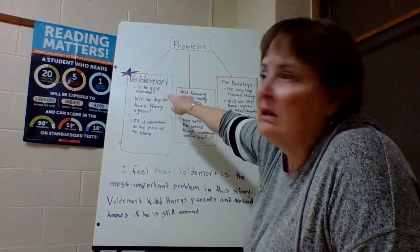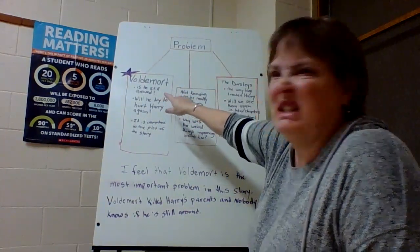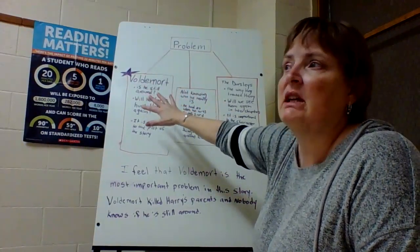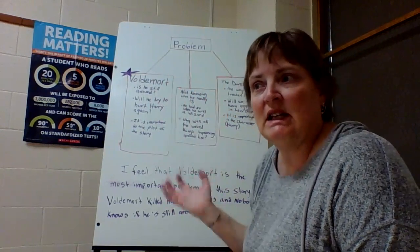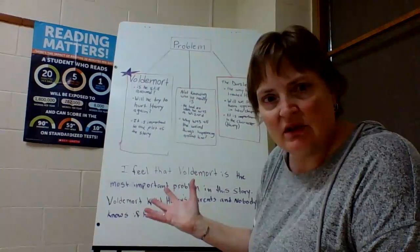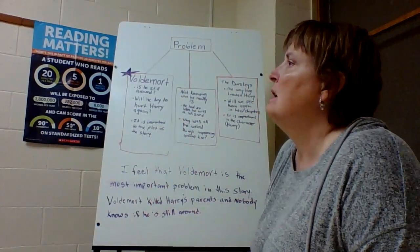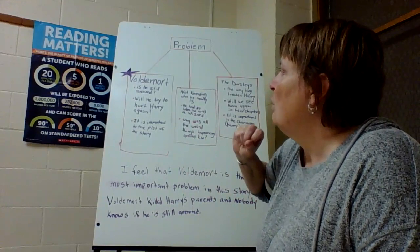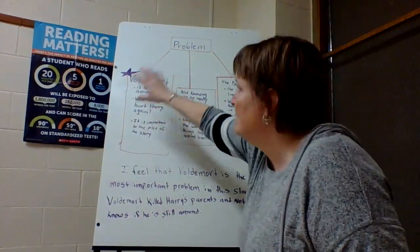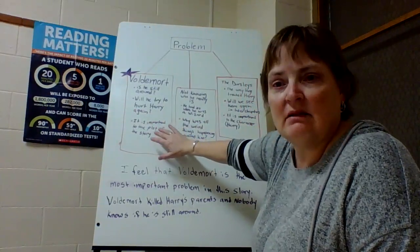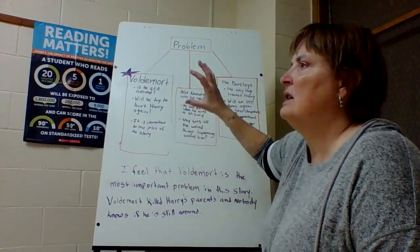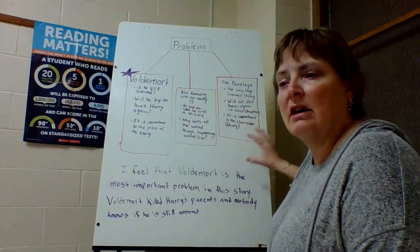The first one is Voldemort. Is he still around? He killed Harry's family, and he supposedly had lost his powers or might have even died. We're not too sure yet what's going on in this story. So is he still around? Will he try to hurt Harry again? I really feel that this one is important to the plot of the story. The plot means how things evolved and how everything gets carried along throughout the story.